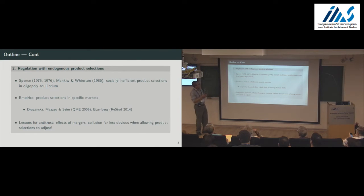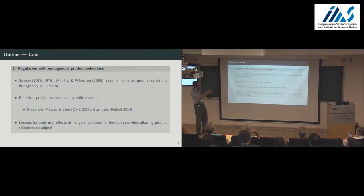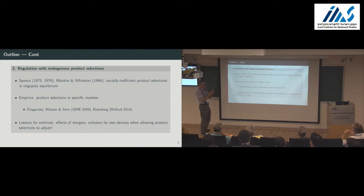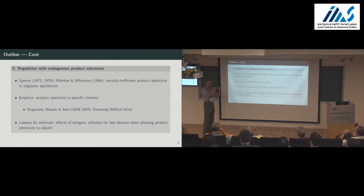This is where endogenous product selections come into play. We'll talk about the mechanics of how to estimate and use models in which firms choose both products and prices. Our starting point would be to note that even before you have a merger or collusion, the market could fundamentally get things wrong in terms of product selections in an oligopoly equilibrium. It could be that we get inefficient entry, excessive entry, duplication of fixed costs, or the wrong type of products from a social planner's point of view.